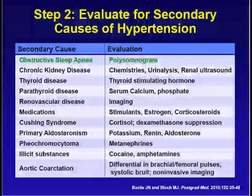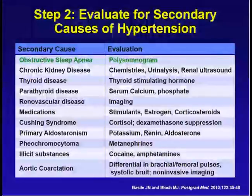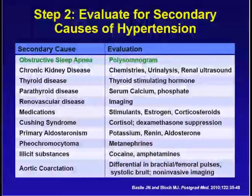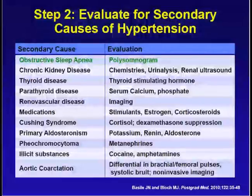We need to evaluate for secondary hypertension. I have listed obstructive sleep apnea as the most important reversible cause of resistant hypertension — it's very common and prevalent, and we tend to under-diagnose it. We need to be aware that obstructive sleep apnea is a risk factor for treatment-resistant hypertension. There is also a huge list of secondary causes including chronic kidney disease, thyroid disease, parathyroid disease, renovascular disease, medication-induced causes, Cushing's syndrome, primary aldosteronism, pheochromocytoma, illicit substances, and coarctation — all important, treatable causes.